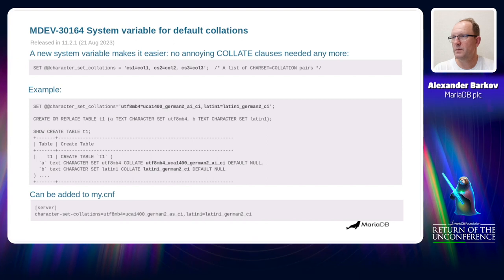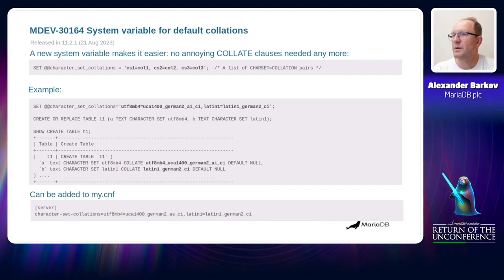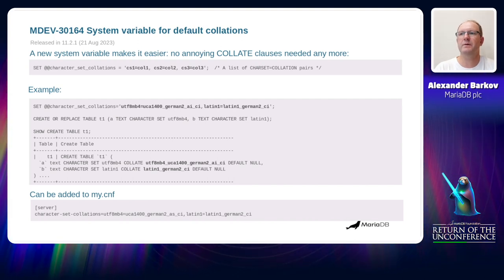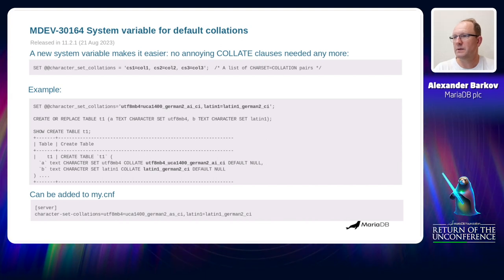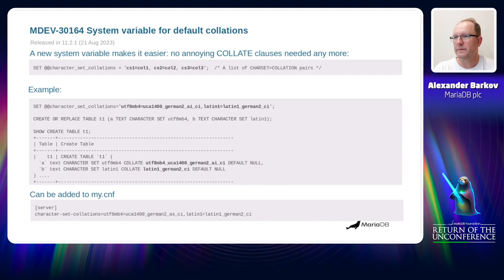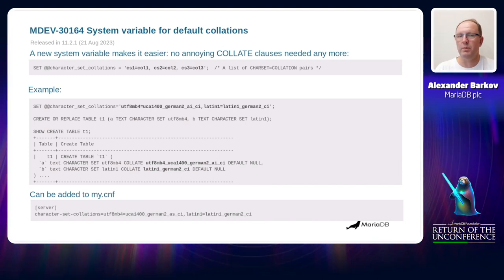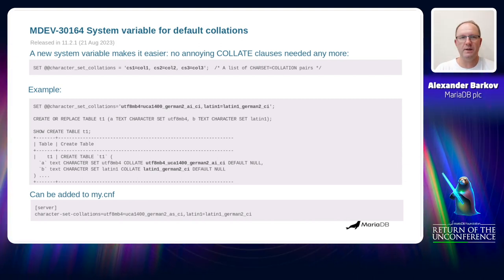For example, you can set the new variable character_set_collations to a list of comma-separated charset=collation pairs. If I set character_set_collations to utf8mb4=uca1400_german2_ai_ci, comma, latin1=latin1_german2_ci — which is what typical German users would do — and then create a table without specifying the COLLATE clause after the CHARACTER SET clauses, then the CHARACTER SET clause is extended taking into account the new variable value. And of course this variable can be added to the my.cnf file, so you don't have to type SET character_set_collations in every session.